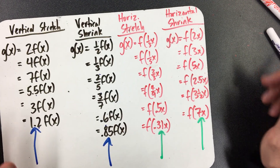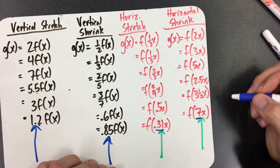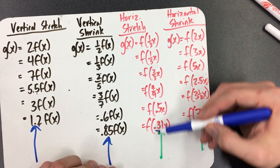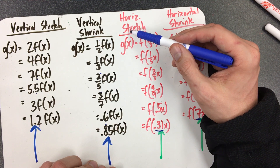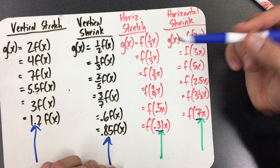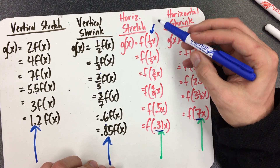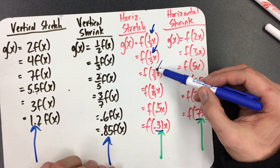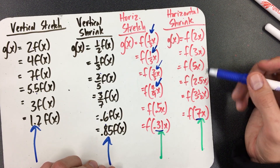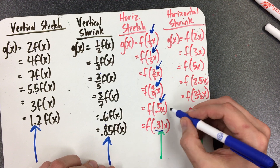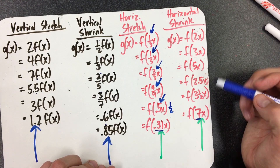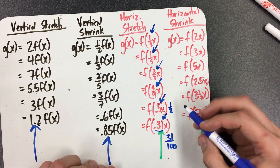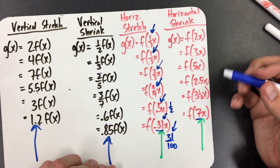These red ones over here — the horizontal ones — are not so easy. Everything is backwards from the way it looks. The number is inside the parentheses, and now it's the opposite: numbers bigger than 1 are actually the shrinks, and numbers between 0 and 1 are actually the stretches. When you state the factor, you flip it and do the reciprocal. So this is a horizontal stretch by a factor of 3, horizontal stretch by a factor of 5, by a factor of 3/2, by 9/4. For 0.5, flip 1/2 to get 2 — horizontal stretch by a factor of 2. For 0.31, that's 31/100, so the reciprocal is 100/31.